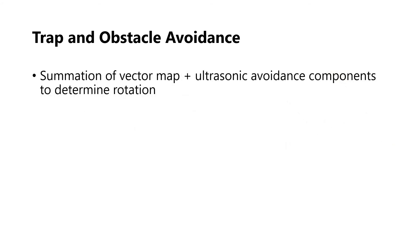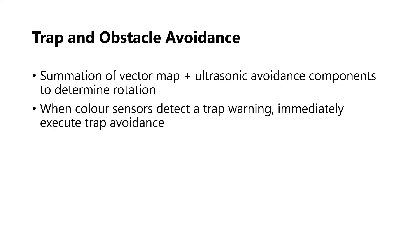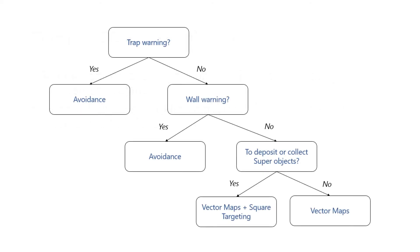By summing the rotation components from the vector map and wall avoidance algorithms, we can achieve successful trap and obstacle avoidance. For additional safeguard, when color sensors detect a trap warning, we immediately execute the trap avoidance algorithm. This flowchart summarizes my strategy for the movement objective.